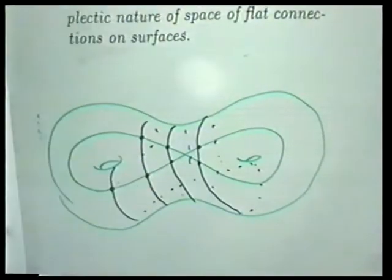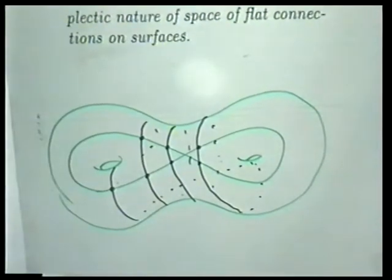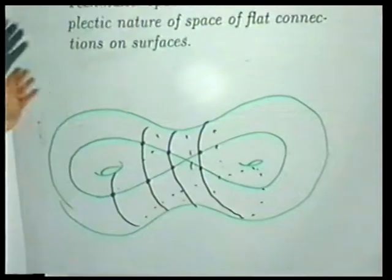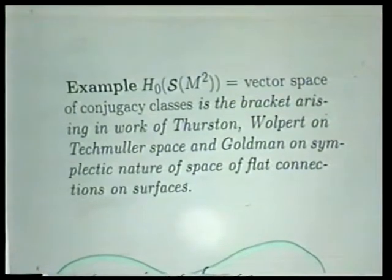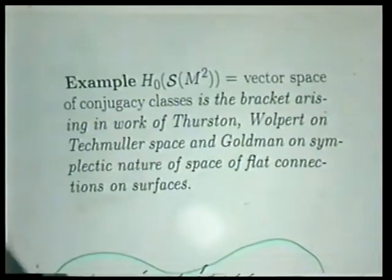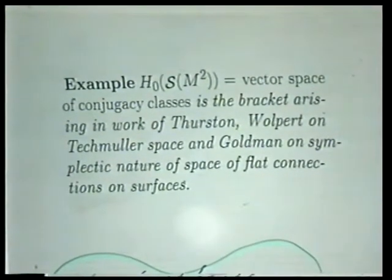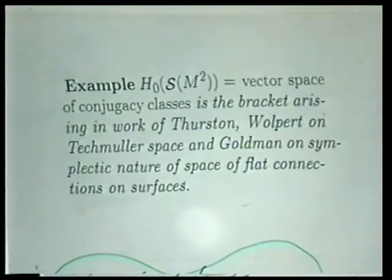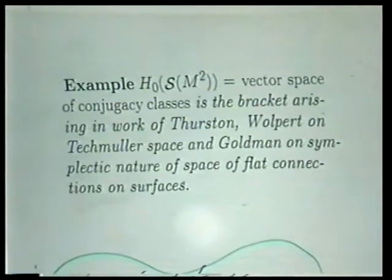I heard about this in '85 and thought it was wonderful but didn't know why, couched in all this language of symplectic geometry. This bracket is the same as the bracket on functions coming from the associated symplectic structure, where the function is given by — on Teichmüller space — the length of the closed curve, or the trace of the holonomy of the flat connection. This Lie algebra structure is defined on the free loop space and string space of all manifolds.